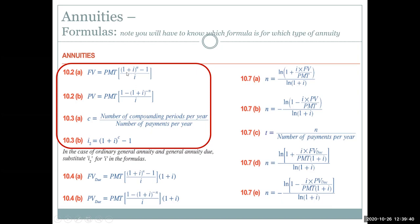The future value of an annuity equals the payment amount times [(1 + i)^n − 1] divided by i, where i is the periodic interest rate and n is the number of compounding periods. We can see the accumulating factor with a positive exponent of n, indicating we're going into the future. The present value formula has a similar structure: the payment times [1 − (1 + i)^(−n)] divided by i. The negative exponent indicates we're going into the past, so we're calculating a present value.